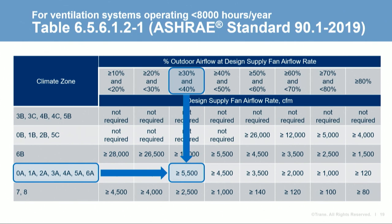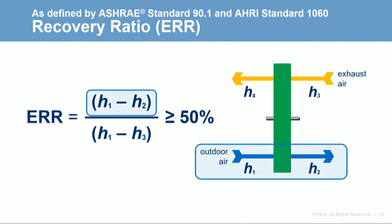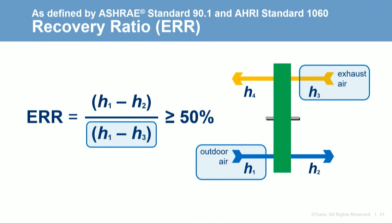When it is required, the energy recovery system must result in an enthalpy recovery ratio of at least 50%, required at both heating and cooling design conditions. The ratio is defined as the change in enthalpy of the outdoor air as it passes through the supply side of the device from H1 to H2, divided by the difference between the enthalpies of the entering outdoor air H1 and the entering exhaust air H3. The standard requires this minimum performance at both conditions unless one of the exceptions applies.